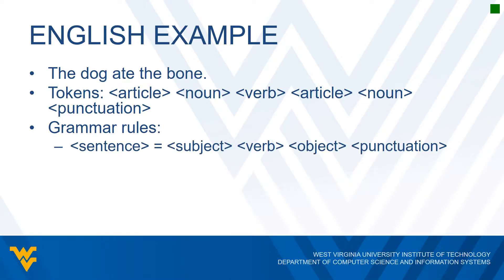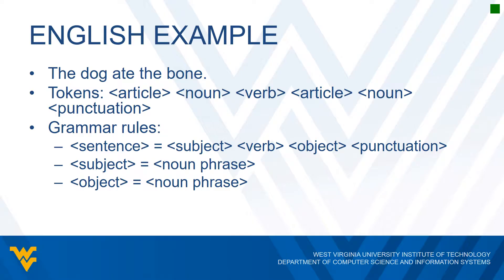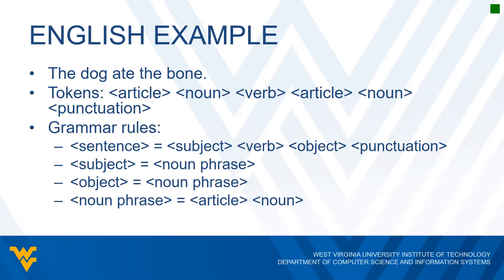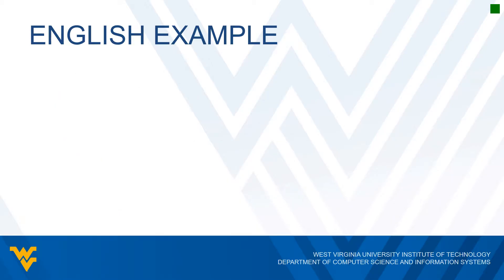What are some grammar rules? Well, there are a lot of grammar rules in English, and we're not going to go over all of them. But here's a subset. A sentence is defined as a subject, a verb, an object, and then some punctuation at the end. A subject is defined as a noun phrase, and an object is also defined as a noun phrase. A noun phrase is defined as an article with a noun together. With these grammar rules, let's take our sentence and see if it is valid.